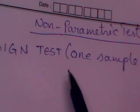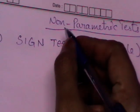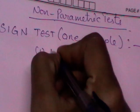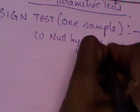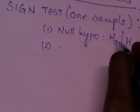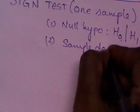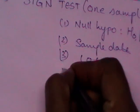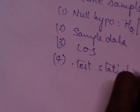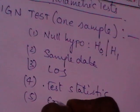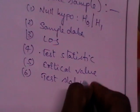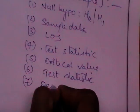We are going to test the very first non-parametric test. Yesterday we discussed the basic steps involved in testing, whether parametric or non-parametric. The steps are: first, write the null hypothesis H0; second, specify H1; then collect sample data; specify the level of significance; write the test statistic; find the critical value; and make a decision to accept or reject.